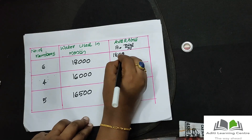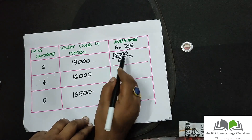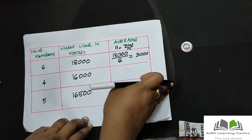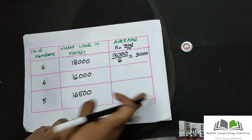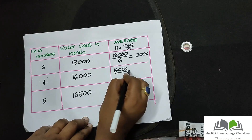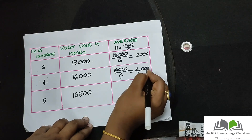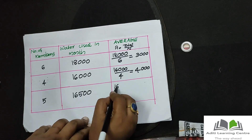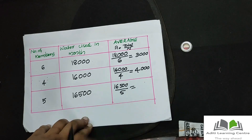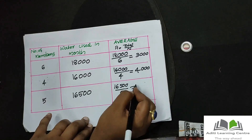18,000 divided by 6 equals 3,000. Next: 16,000 divided by 4 equals 4,000. Next: 16,500 divided by 5 equals 3,300.